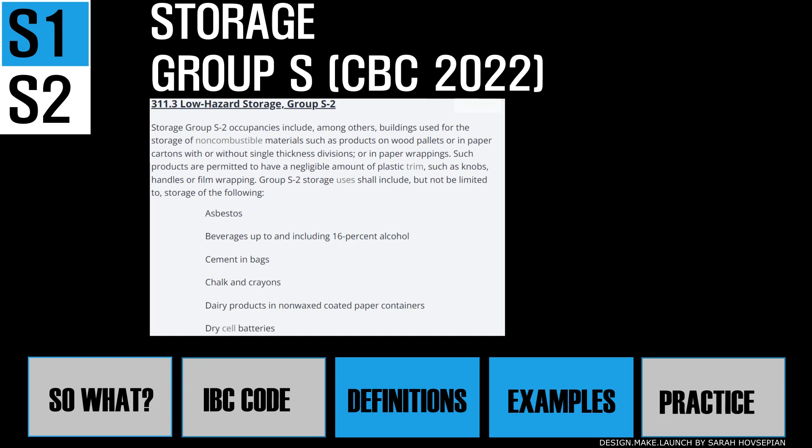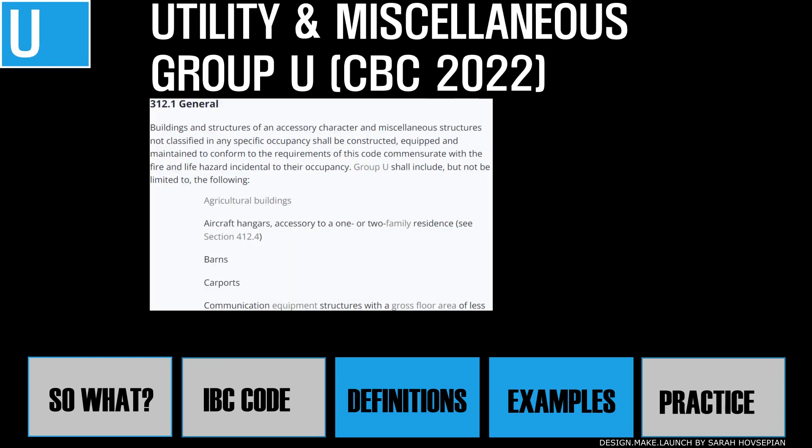Finally, the last category is U for utility and miscellaneous — buildings and structures of an accessory character and miscellaneous structures not classified in any specific occupancy. This would include agricultural buildings, carports, private garages, stables, and more.